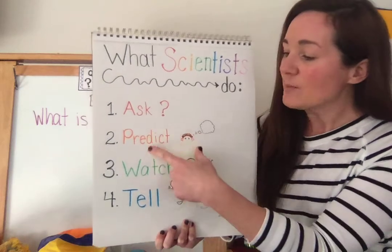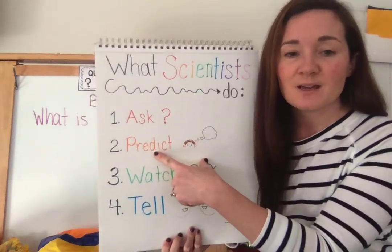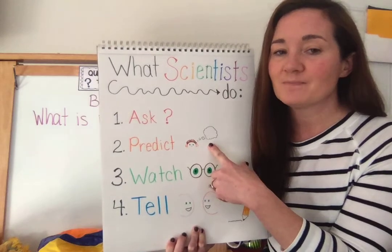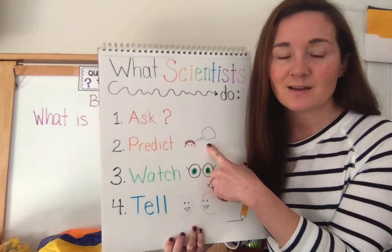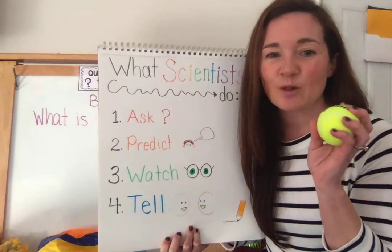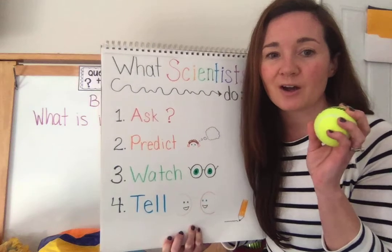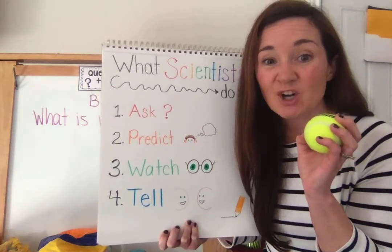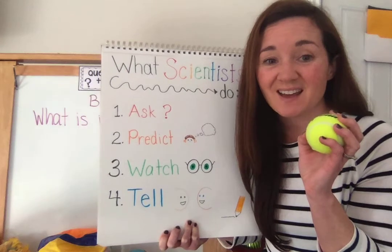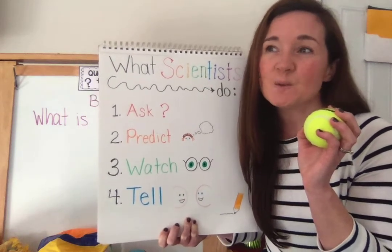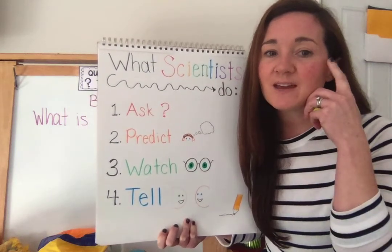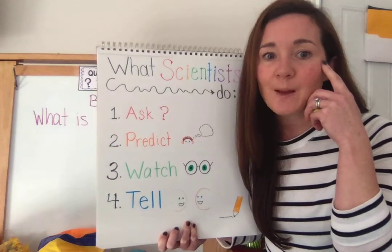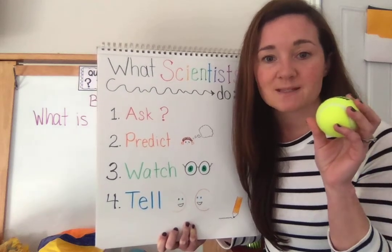Now I'm going to predict. If I predict, that means I think about it and I make a guess. So since this ball is pretty hard, I think maybe something hard is inside, and since it bounces, I might be thinking about different materials that might help it bounce that might be inside.